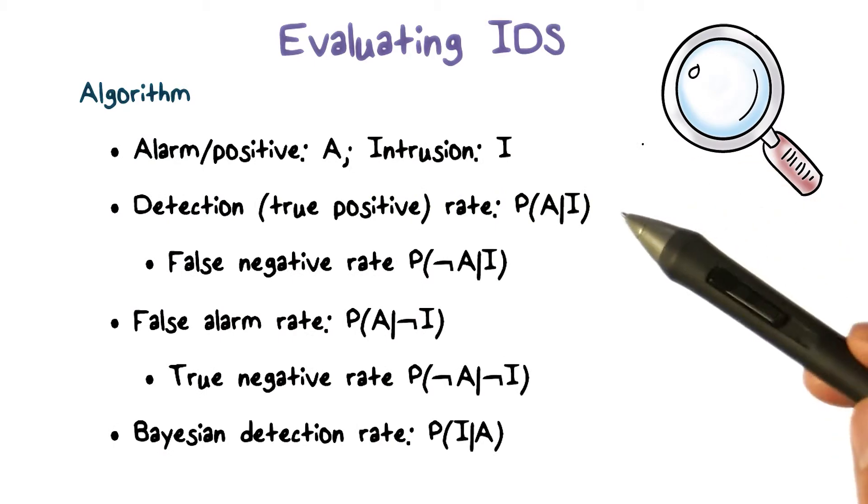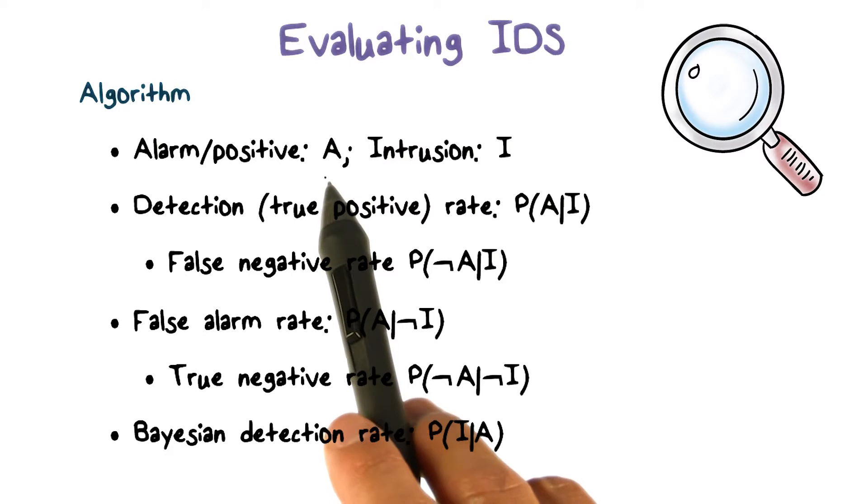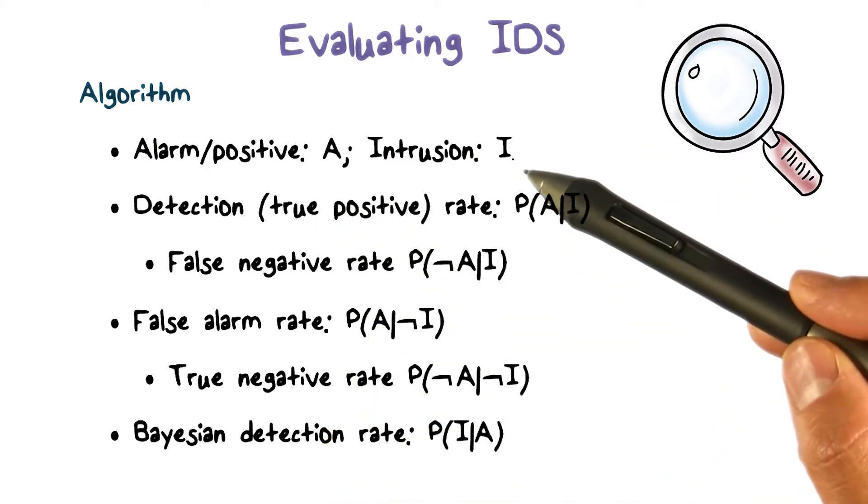We can more formally summarize these metrics. Here we use A to represent alarm, or positive, I to represent intrusion.